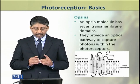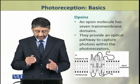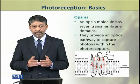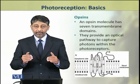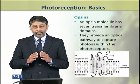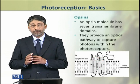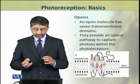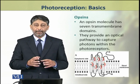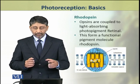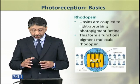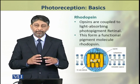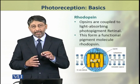An opsin molecule has seven transmembrane domains. These opsin proteins provide an optical pathway to capture photons within the photoreceptor cells. The opsin proteins are coupled to the light-absorbing photopigment retinol.